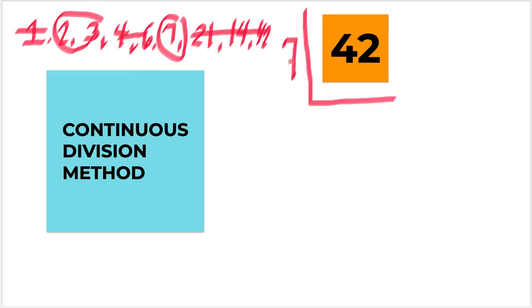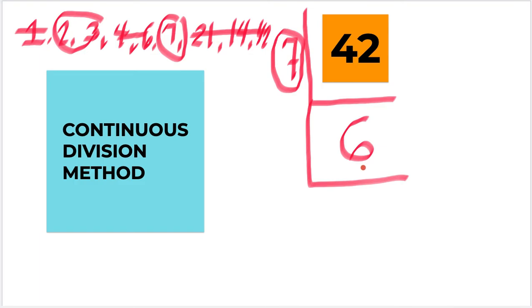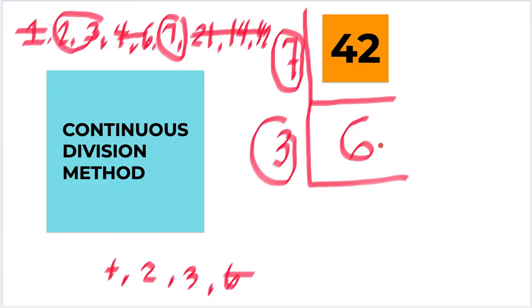This time I will be using 7. 7 is a prime. So 42 divided by 7 gives 6. Since 6 is not a prime, we need to continue the process. The numbers that can exactly divide 6 are 1, 2, 3, and 6. Since 1 and 6 are not prime, we will use 2 or 3. Let's use 3. 3 is a prime, so 6 divided by 3 gives 2. And 2 is a prime, so we stop the process.